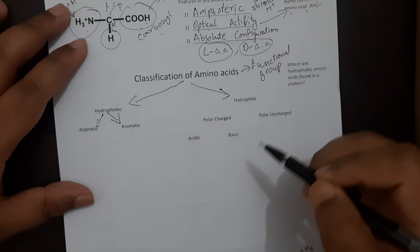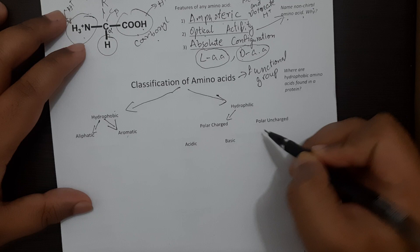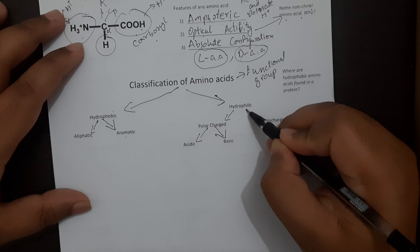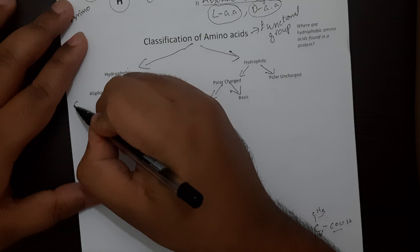Whereas hydrophilic amino acids can be subdivided into polar charged hydrophilic amino acids which can be further divided into acidic polar charged and basic, and the other hydrophilic amino acids can be divided into polar uncharged. So I'll just briefly go into each part.